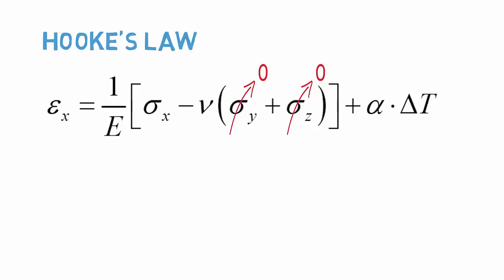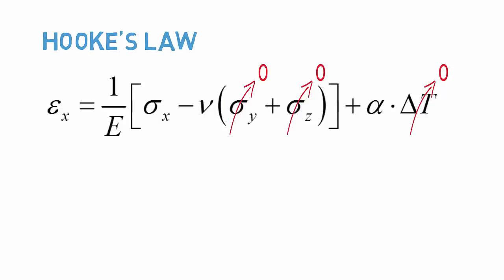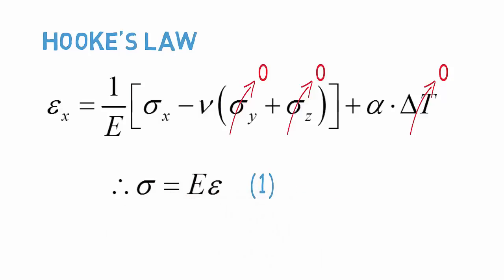We are also not considering a temperature change at this time, so delta T also reduces to zero. Hooke's Law for this problem can then be simplified as follows.